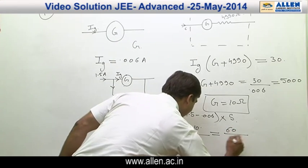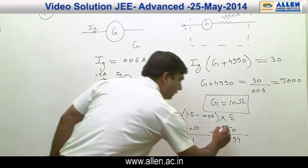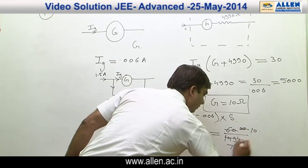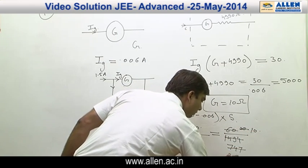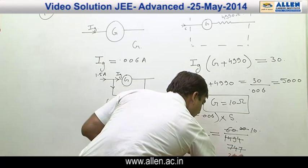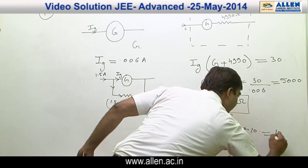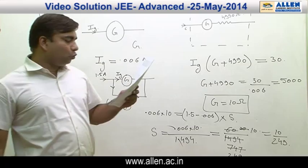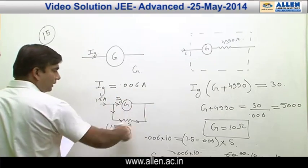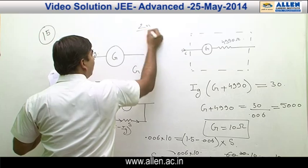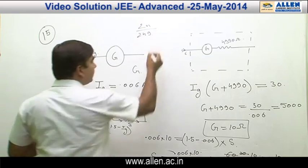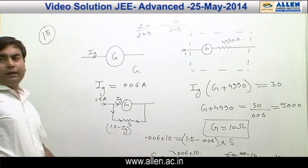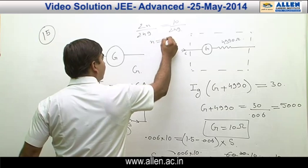This simplifies to 60 / 1494, which equals 10 / 2.49. The question states the resistance is 2N / 2.49, and we are getting 10 / 2.49. Comparing both, we get 2N = 10, hence N = 5.